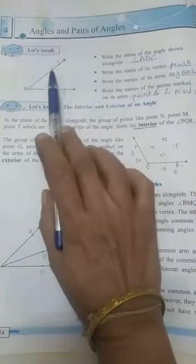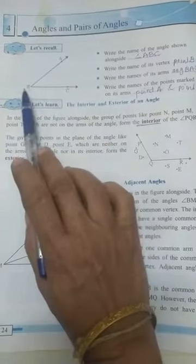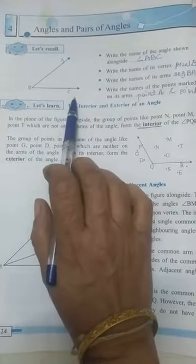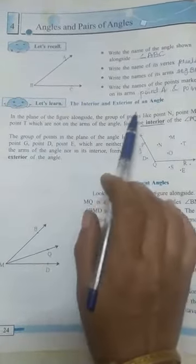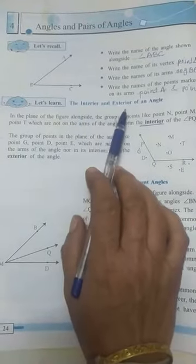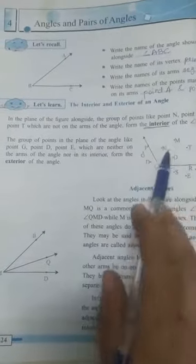You know the angle, see, here angle ABC is there. Now we are in this chapter, we are seeing the interior and exterior of an angle.